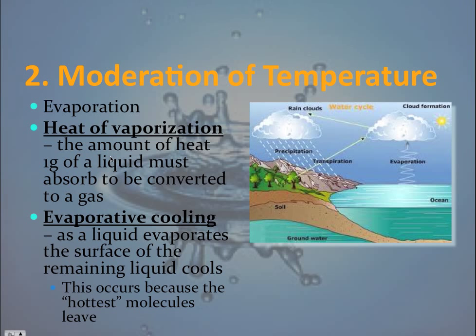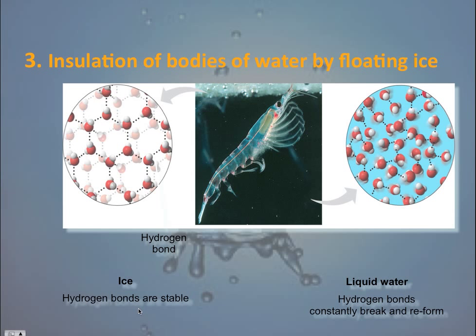Water also has a very high heat of vaporization and the capacity for evaporative cooling. The third emergent property is its insulation of bodies of water by way of floating ice. Looking at ice versus liquid water configurations, the bond angles in liquid water are slightly more acute than in ice's ordered lattice structure. These more organized bonds allow air pockets to develop, providing buoyancy that allows ice to float on liquid water.